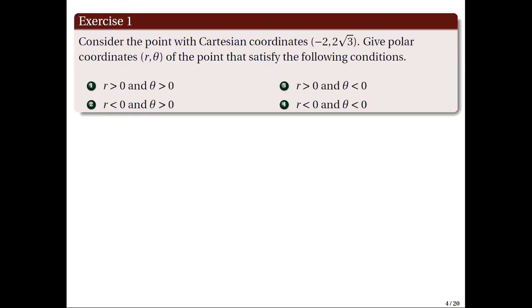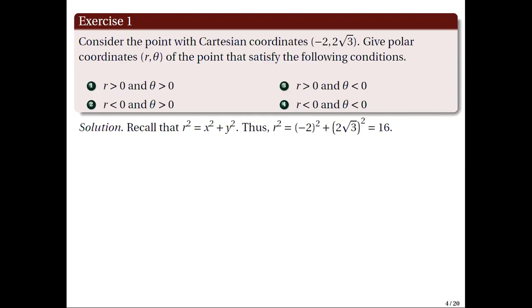First, we recall the conversion equation r squared equal to x squared plus y squared. Using the given values, we have r squared equal to negative 2 quantity squared plus 2 square root of 3 quantity squared, equal to 16. For the first case, take r equal to 4.